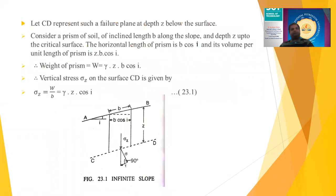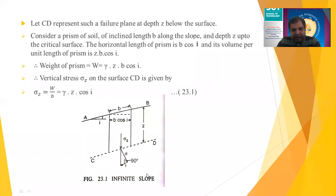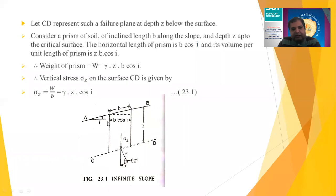Consider a prism of soil with inclined length B along the slope, depth Z below the surface, and horizontal length B·cos I. The weight of the prism equals the unit weight of the soil γ multiplied by depth Z and width B·cos I. The vertical stress σ_Z acting at the base of the sliding surface is obtained by dividing the weight by the area, giving σ_Z = γ·Z·cos I.